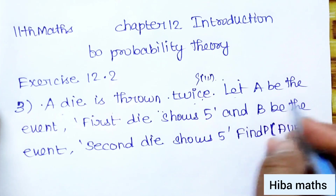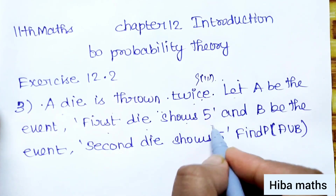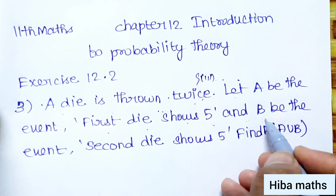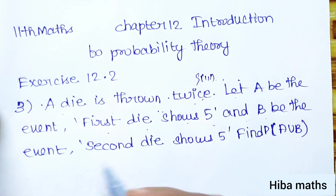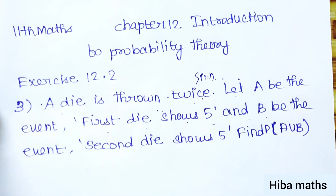Let A be the event that the first die shows 5, and B be the event that the second die shows 5. Find P of A union B.